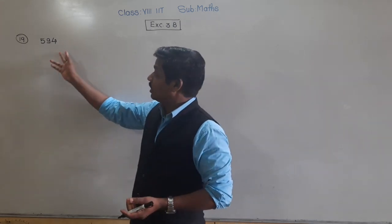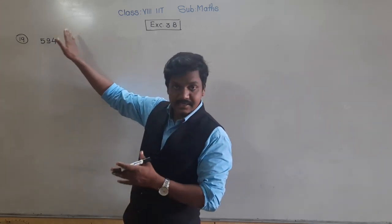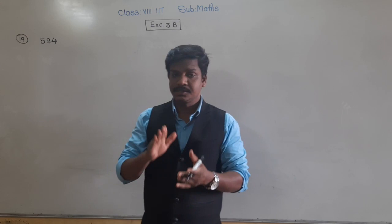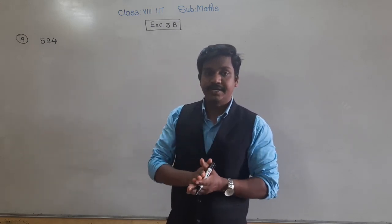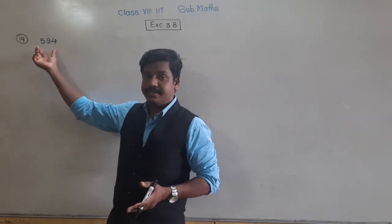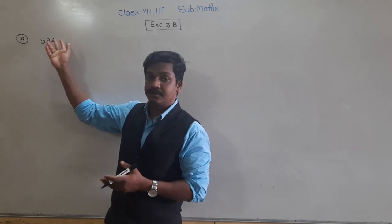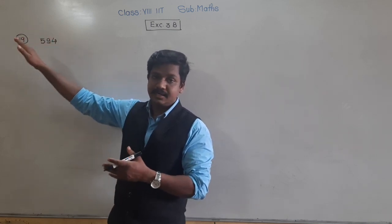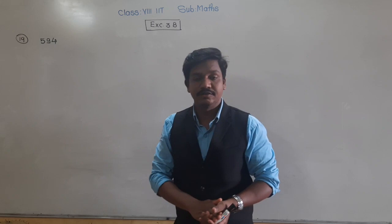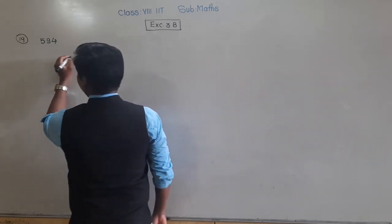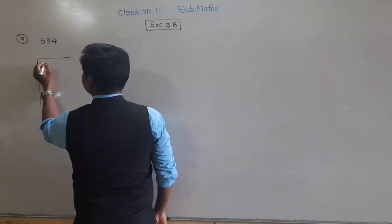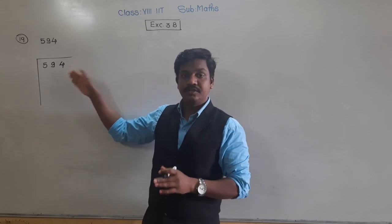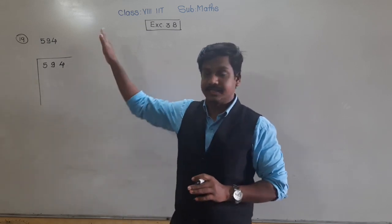When we add that smallest number to 594, we will get a perfect square. So first, we need to find which is the smaller perfect square than 594. Once we get that, we can find it using our long division method. By long division method, since 594 is not a perfect square, we will come to know which is the smaller perfect square than 594.